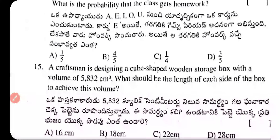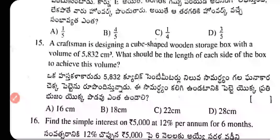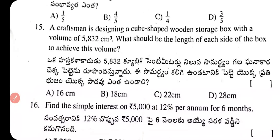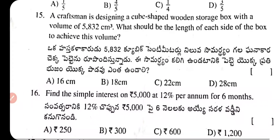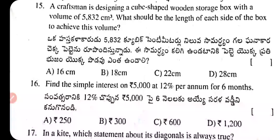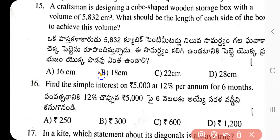Question 15: A craftsman is designing a cube-shaped wooden storage box with a volume of 5832 cm³. What should be the length of a side of the box? The correct answer is 18 cm. Option B is the right answer.